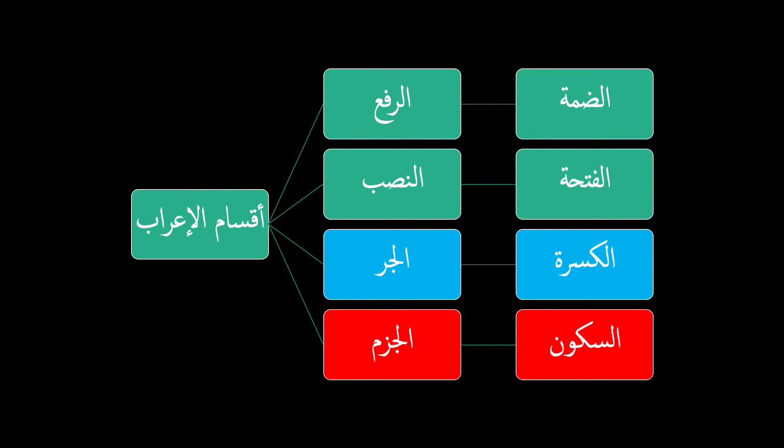For example: 'Inna Zaydan lan yaqooma.' Zaydan here is an ism, it's mansoob, and its sign of nasb is the apparent fathah — that's the primary sign. Yaqooma is a fi'il mudari' mansoob by 'lan', and its sign of nasb is the apparent fathah. For the jar: 'bi Zaydin' — Zaydan here is an ism majroor, and its sign of jarr is the apparent kasrah — that's the primary sign of jarr. For jazm: 'lam yadrib' — yadrib is a fi'il mudari' majzoom by lam, and its sign of jazm is al-sukoon — again the primary sign of jazm.